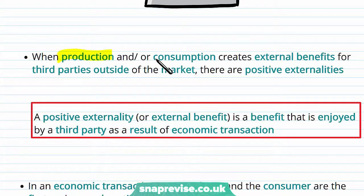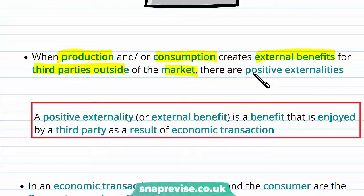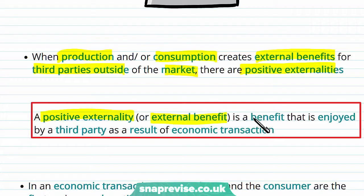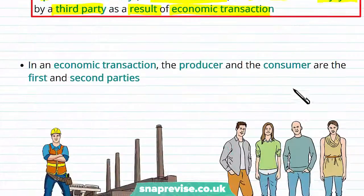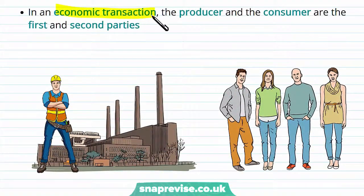When production and/or consumption creates external benefits for third parties outside of the market, these are called positive externalities. We define positive externalities as external benefits — a benefit that is enjoyed by a third party as a result of economic transactions. In economics we think about plenty of transactions or exchanges between our producers and consumers, who are called our first and second parties.